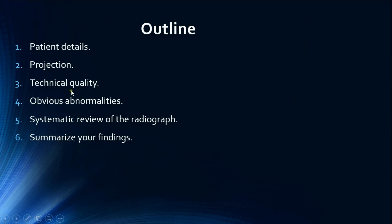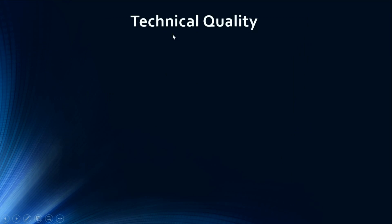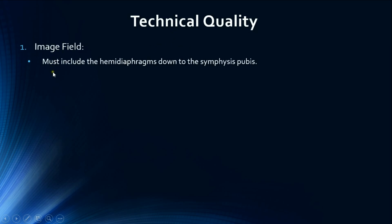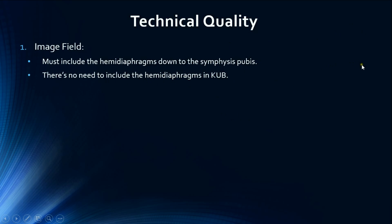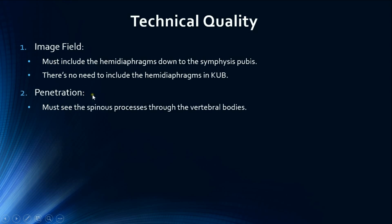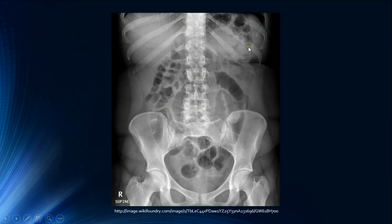Moving to assessment of technical quality, which is simpler than for chest radiographs. We check two things: first, image field — it must include the hemidiaphragms down to the symphysis pubis, except for KUB where the top of the image is approximately at the superior poles of the kidneys. Second, penetration — the spinous processes must be visible through the vertebral bodies.